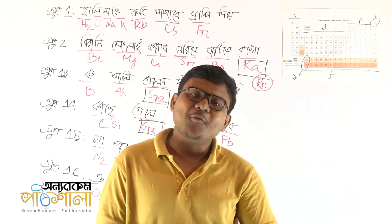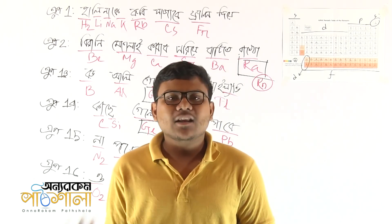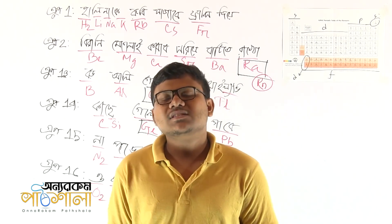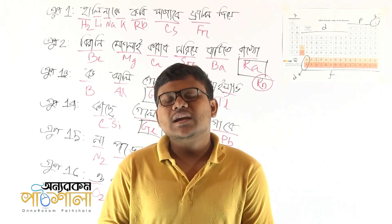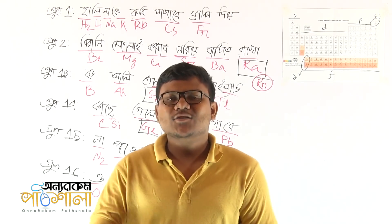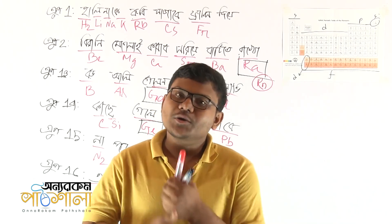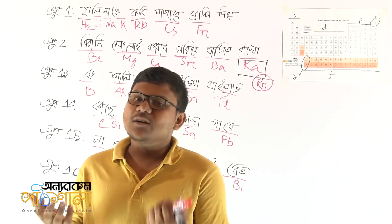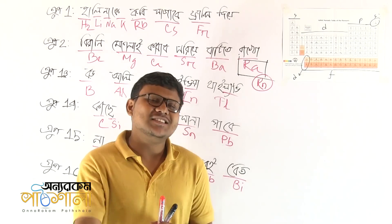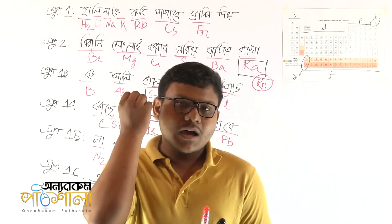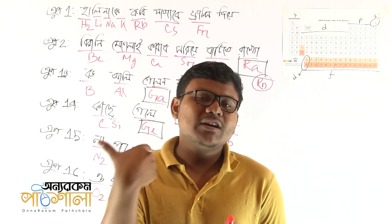Group 17 is the halogens. The halogens are: fluorine, chlorine, bromine, and iodine. We also have astatine, which is one of the rarest elements.